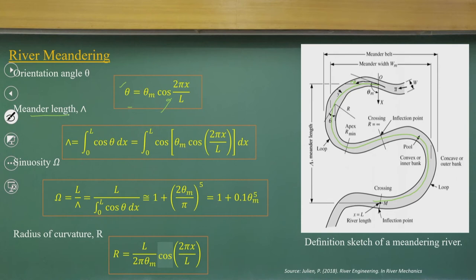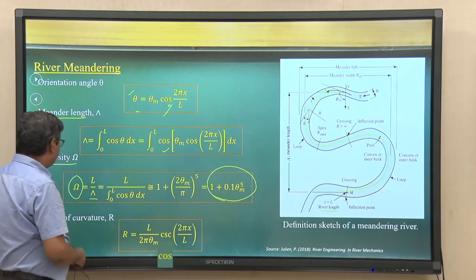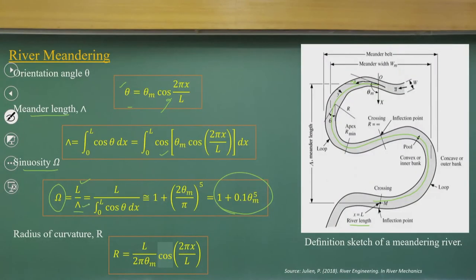Sinuosity plays a major role. From satellite imagery we can compute sinuosity as the ratio of river length to meander length, which is a function of theta_m. We can also get radius of curvature from geometrical formulas. The minimum radius of curvature occurs at 75 degrees theta_m. Meandering width increases rapidly as theta_m exceeds 90 degrees, reaching a value of 3.25 at the cutoff point.